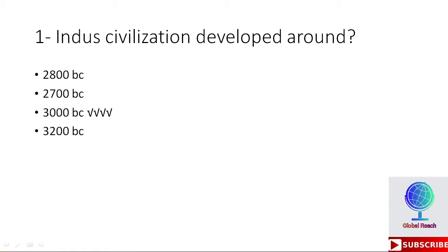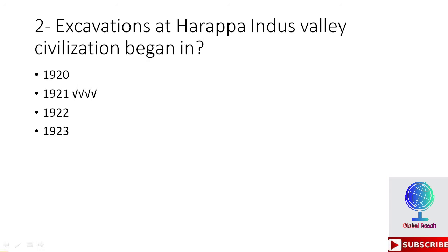MCQ 1: The Indus Valley civilization developed around — 2800 BC, 2700 BC, 3000 BC, or 3200 BC? The right option is 3000 BC. MCQ 2: Excavation at Harappa, Indus Valley civilization began in — 1920, 1921, 1922, or 1923? The right option is 1921. Excavation at Harappa began in 1921.